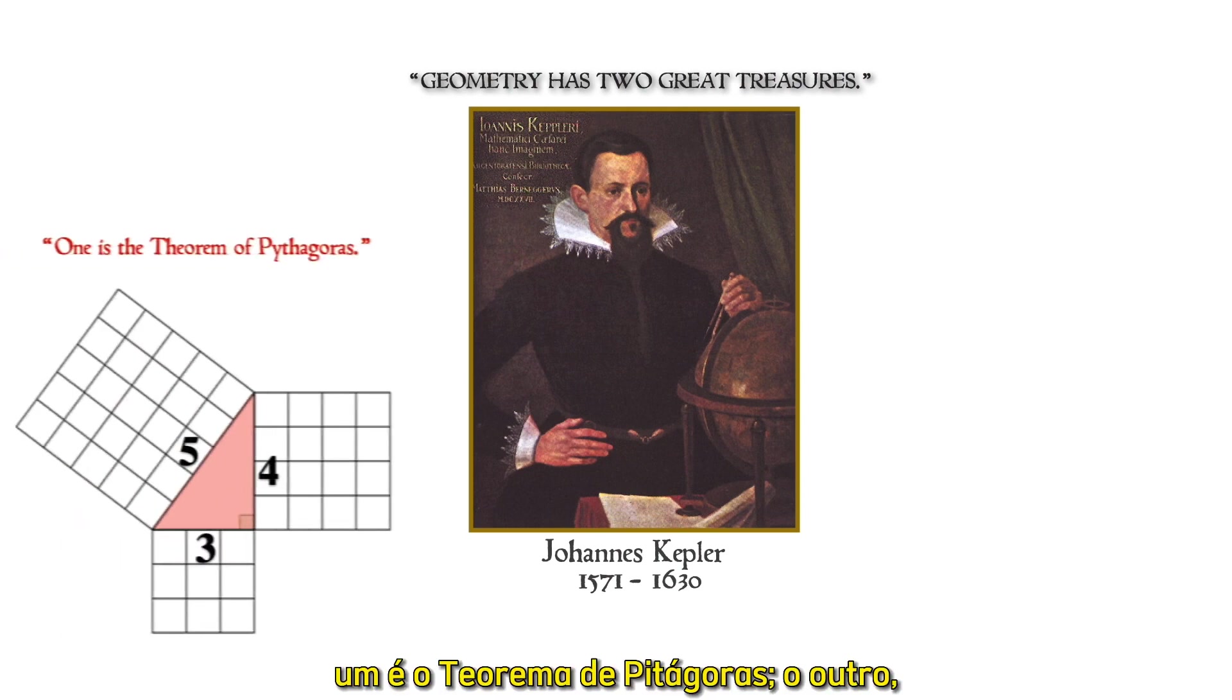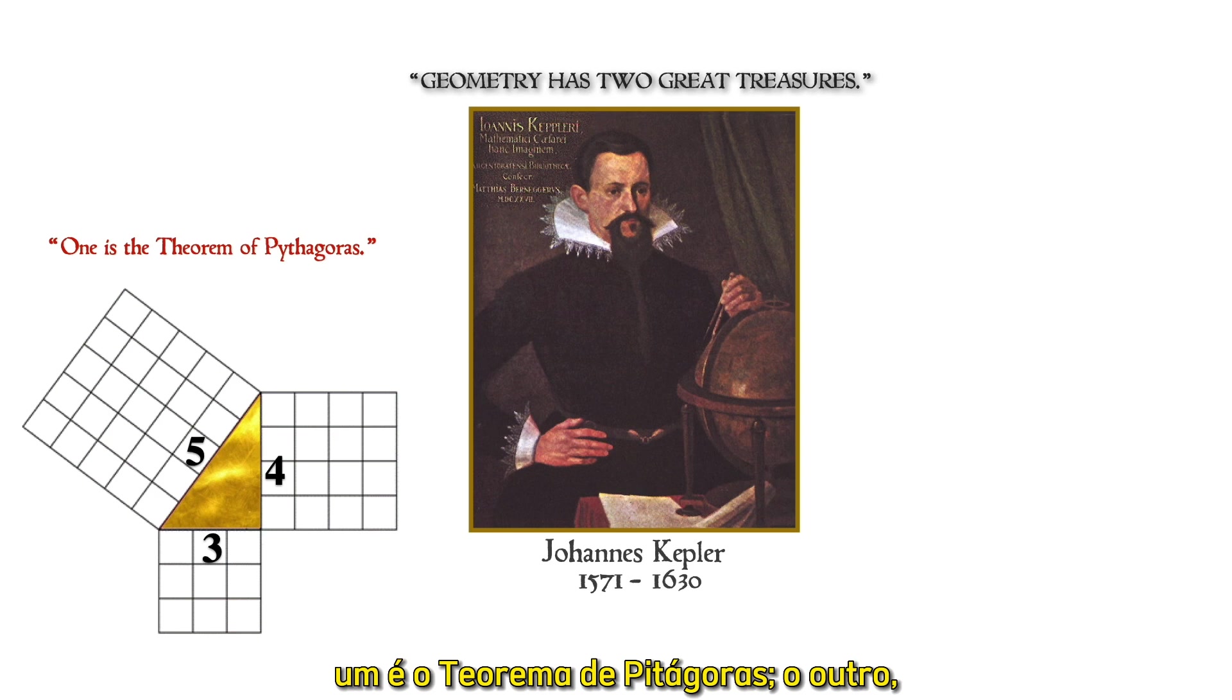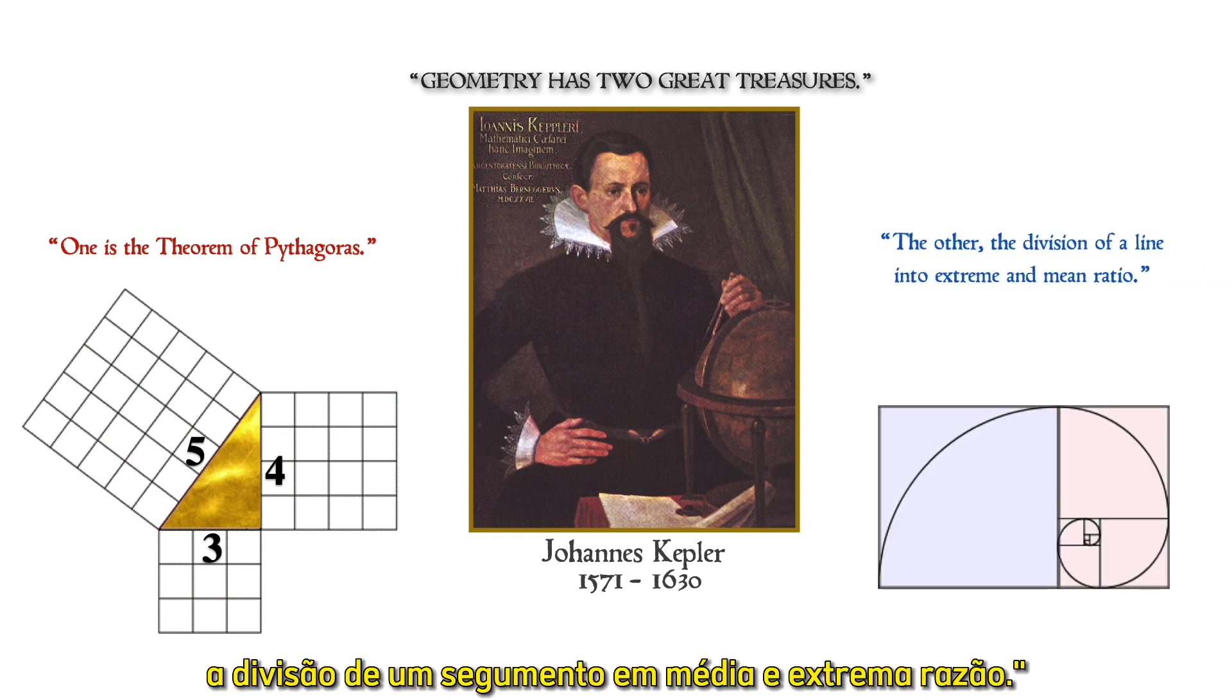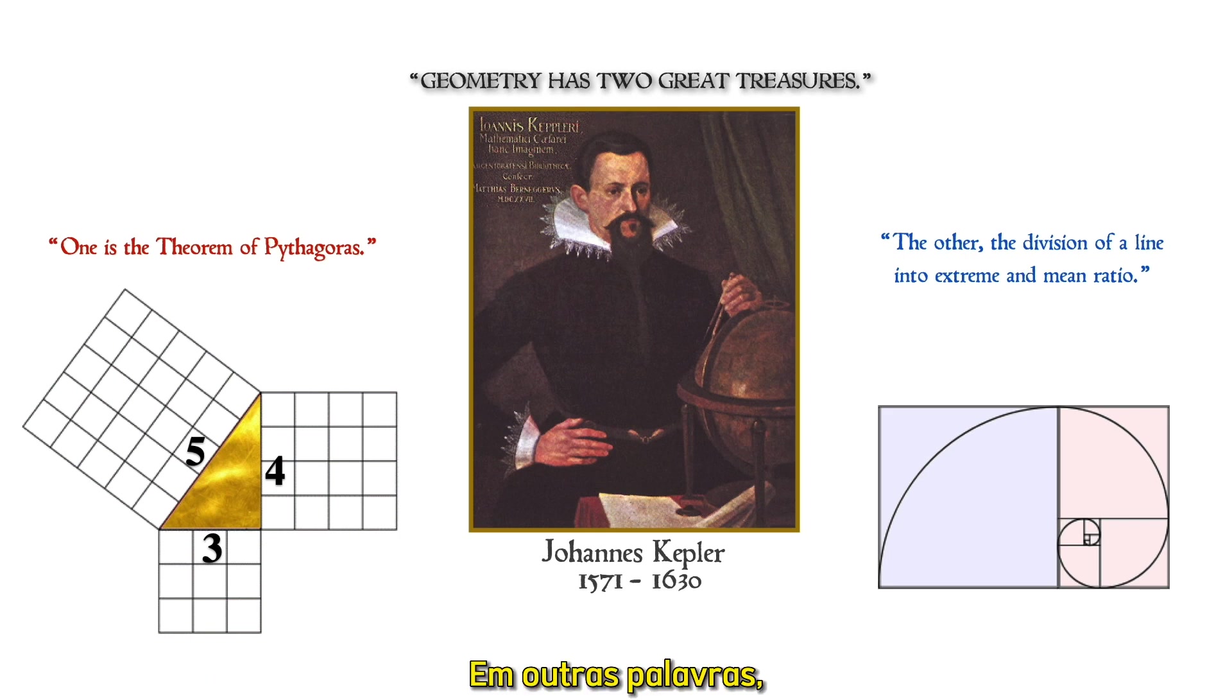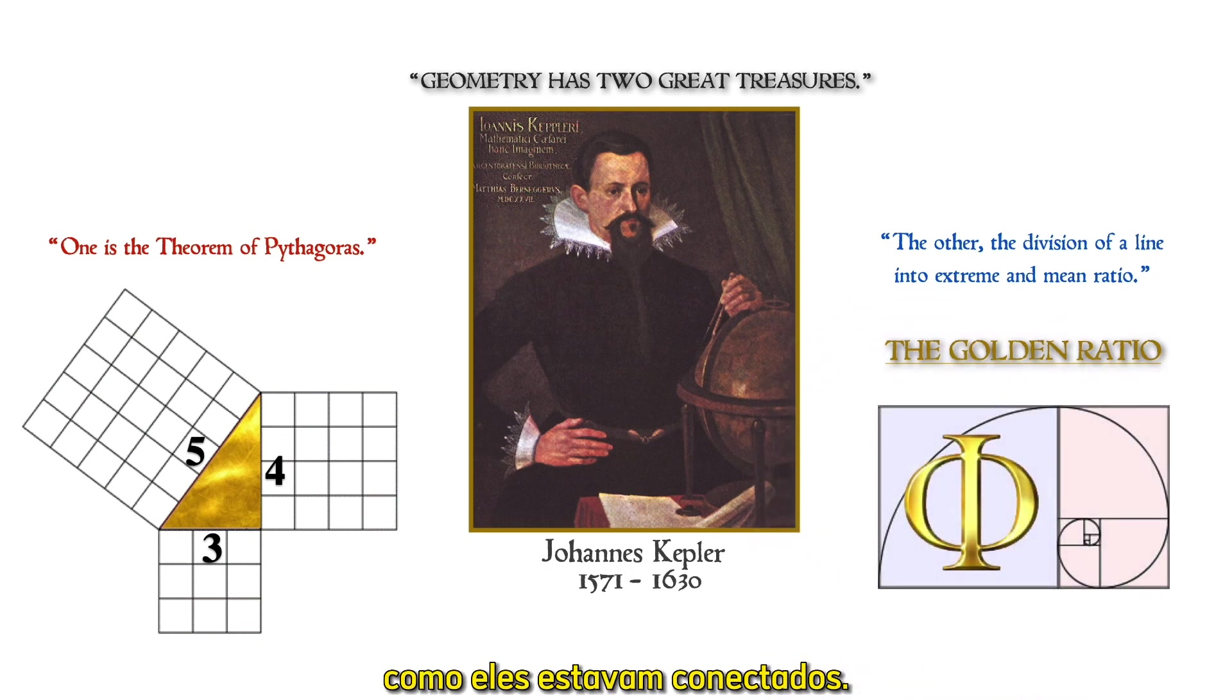One is the theorem of Pythagoras, the other the division of a line into extreme and mean ratio - in other words, the golden ratio. But he couldn't figure out how they were connected.